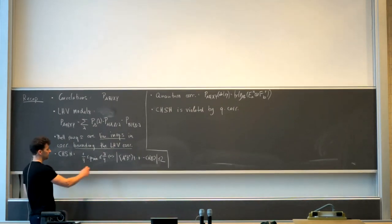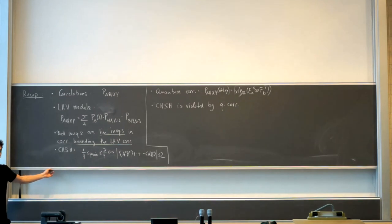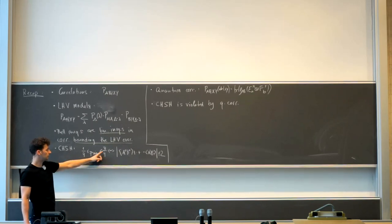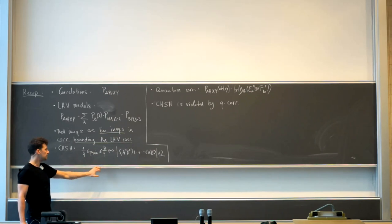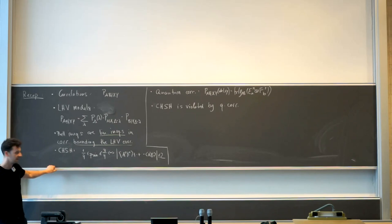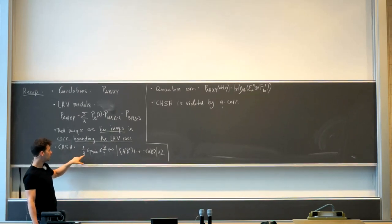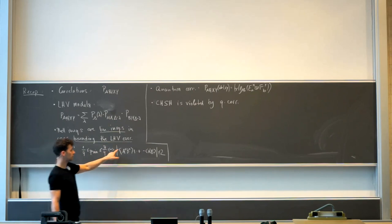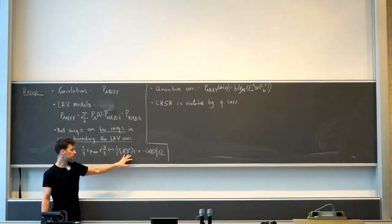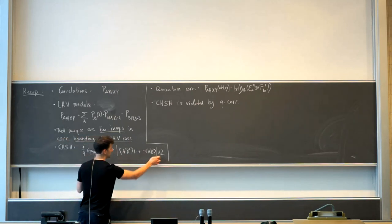What we considered yesterday was the winning probability of this non-local game — the CHSH game. We only gave an upper bound, which turned out to be 75%. But equally, you could also go for a lower bound. If you want to play this game and lose with as high a probability as possible, it's as hard as winning with as high a probability as possible — it's symmetric. So the CHSH inequality can be phrased as: one fourth ≤ winning probability ≤ three fourths.